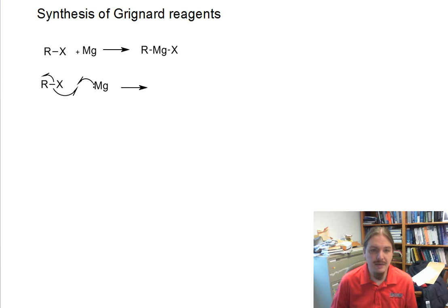That would generate a carbon radical and a halo-magnesium radical that then can recombine to form the carbon-magnesium bond.